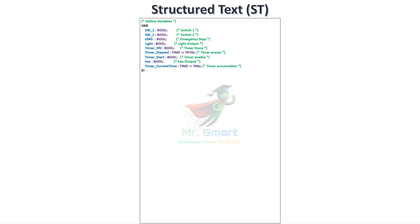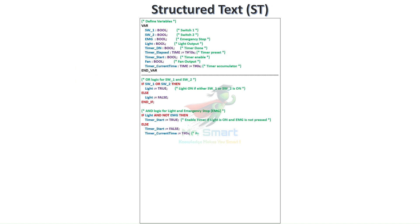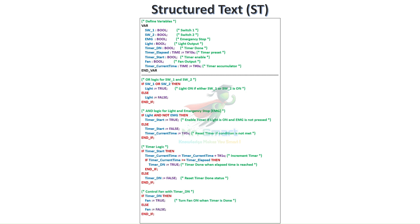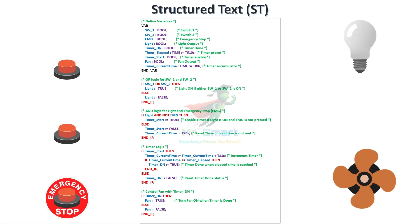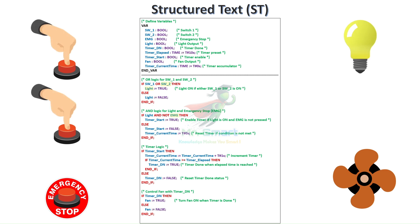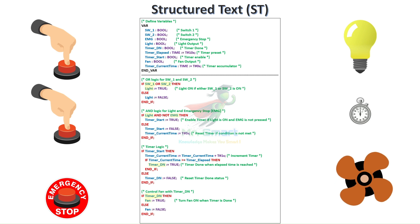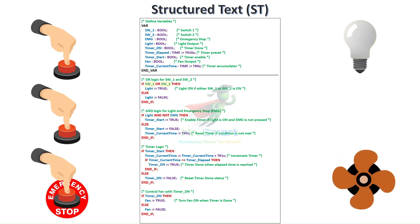Structured text is a high-level programming language that feels like traditional coding in Python, C, or Java. It uses structured commands to create logical operations, loops, and calculations. With its ability to handle complex data, it's perfect for tasks like advanced mathematical operations, data logging, and communicating with external systems. While it requires a stronger programming background, its power and versatility make it a favorite for seasoned programmers and engineers.